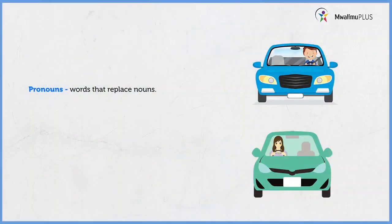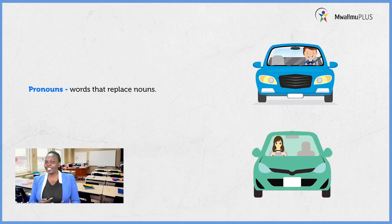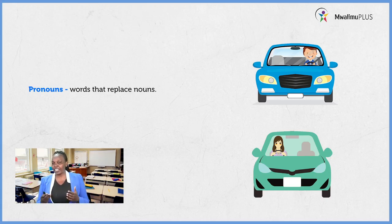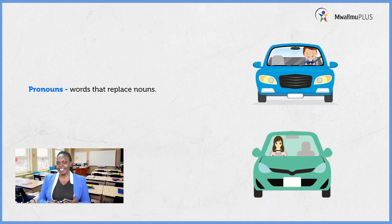Let us start by looking at what we call pronouns. In class four and class five, you've learned parts of speech, and we know that there are eight parts of speech — we have nouns, verbs, adverbs, and pronoun is one of them. A pronoun is a word that we use to replace a noun. For example, if we want to say Mary is driving a car, instead of the word Mary we can say she is driving a car. So she is a pronoun replacing the noun Mary.